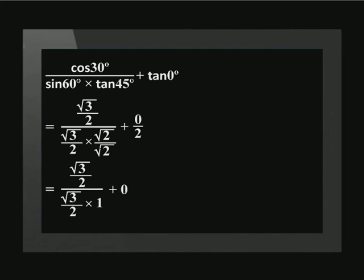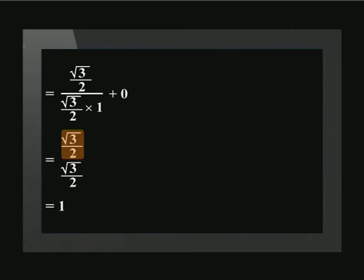Now let's simplify the expression. Remember that we are working with fractions and need to apply all the rules of working with fractions. Let's start by looking at each fraction individually. Root 2 over 2 is equal to 1, and 0 over 2 equals 0. Now we have root 3 over 2 divided by root 3 over 2, which is equal to 1.